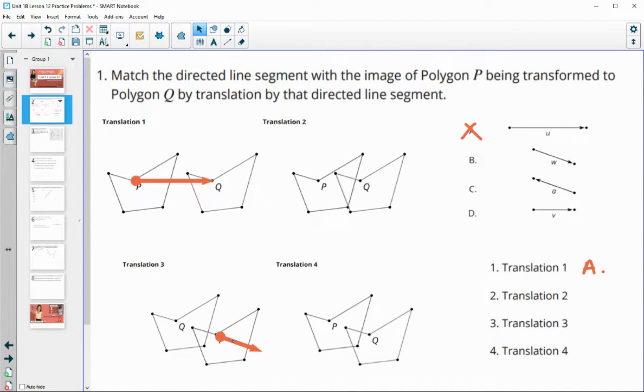P to Q. So definitely not for translation three. Translation four, P maps to Q. That would be good. So translation number four is vector W, which goes with B.